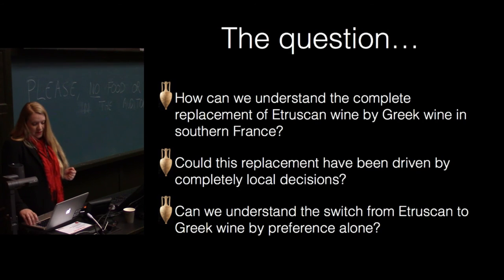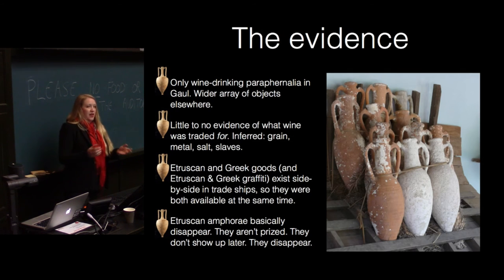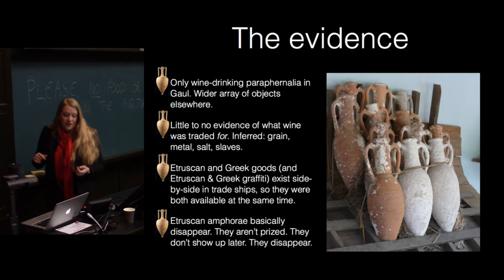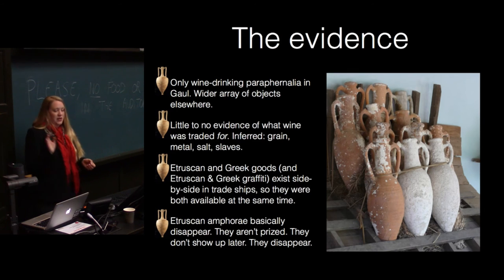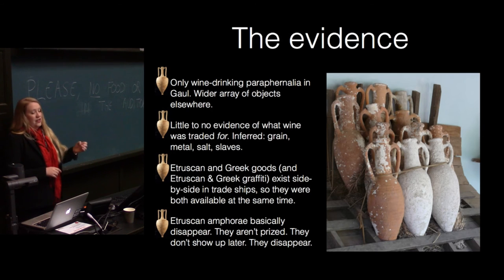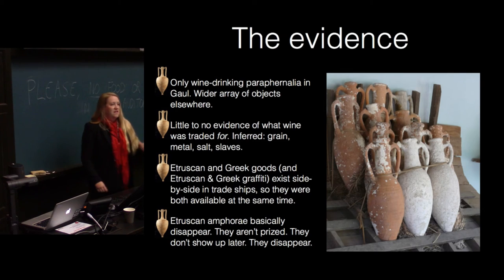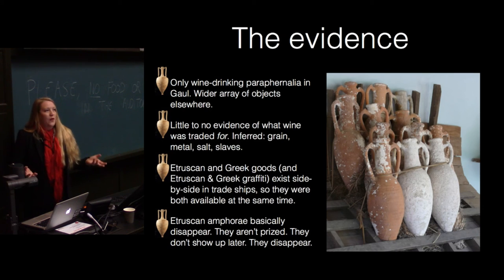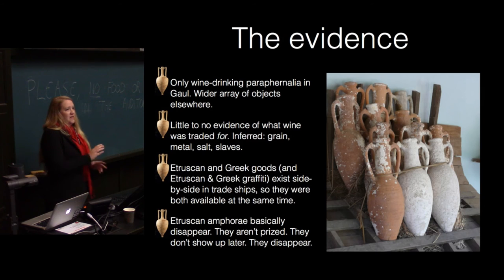Due to the paucity of archaeological data, agent-based modeling provides a way to look at the switch from Etruscan to Greek wine by preference. The evidence is that only wine-drinking paraphernalia was found in Gaul — the Gauls only wanted wine, only wanted amphora. There's little to no evidence of what wine was traded for, though people have inferred grain, metal, salt, and even slaves. We see both Etruscan and Greek goods side by side in ships for a long time, and Etruscan and Greek graffiti side by side. But we can source these ceramics and know they come from Greece or Etruria. Etruscan wares just disappear — people don't prize them, they don't hold onto them.